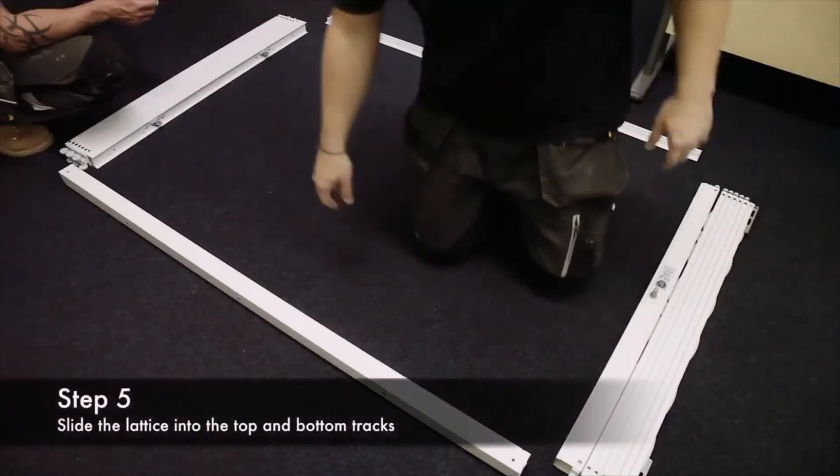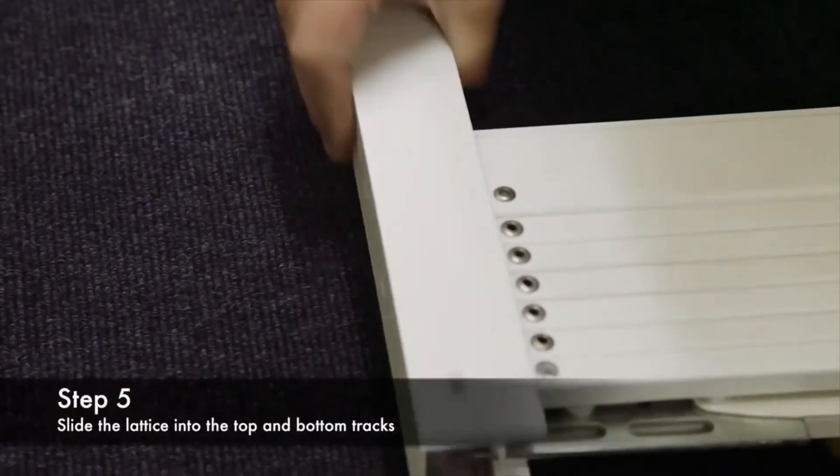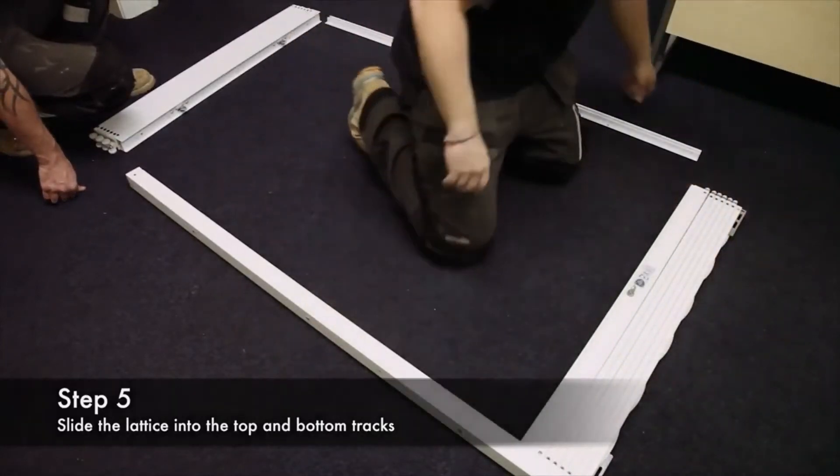Now we're going to put the grille together. We're going to start by sliding the top track over the wheels, make the lattice work and then move on to the bottom.